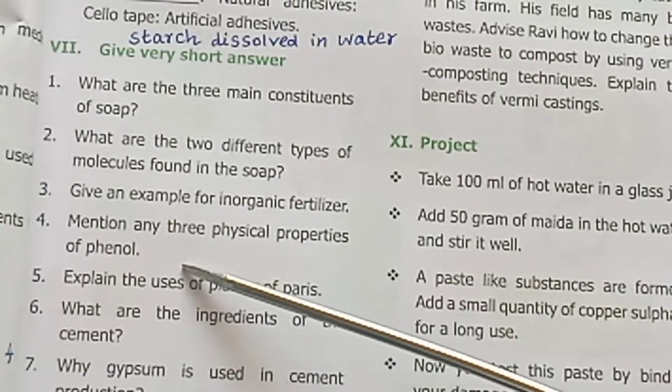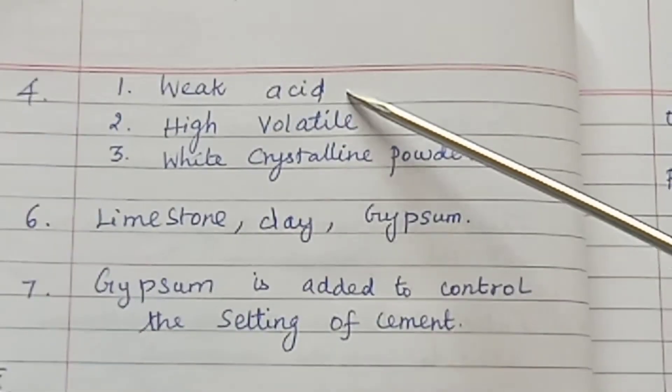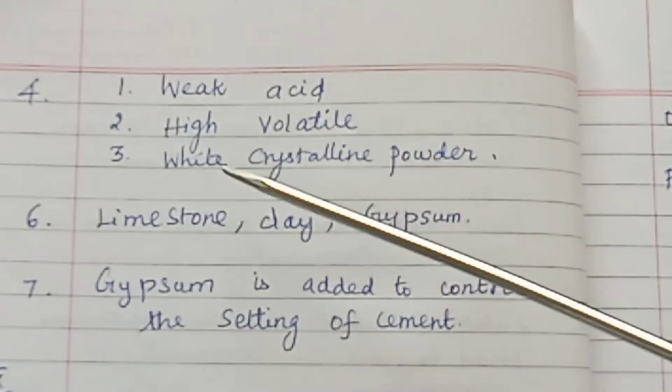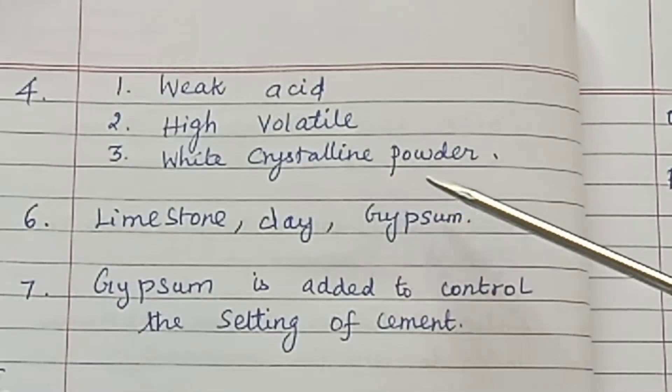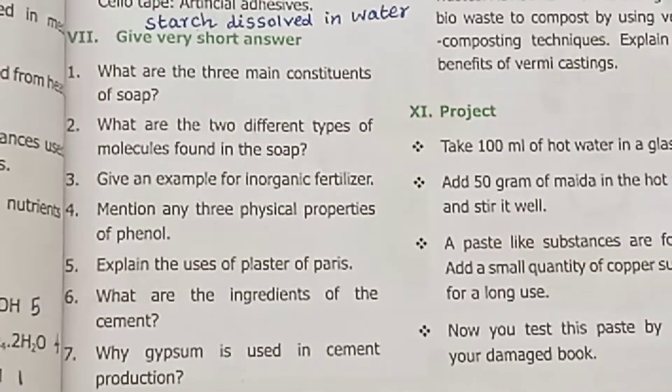4. Mention any 3 physical properties of phenol: 1. Weak acid, 2. High melting point, 3. White crystalline powder.